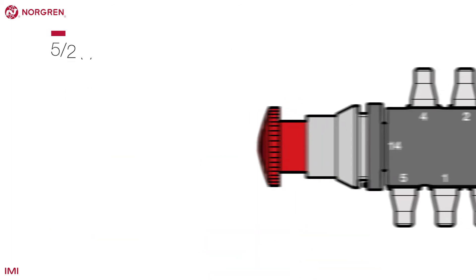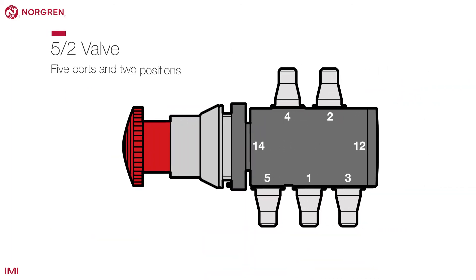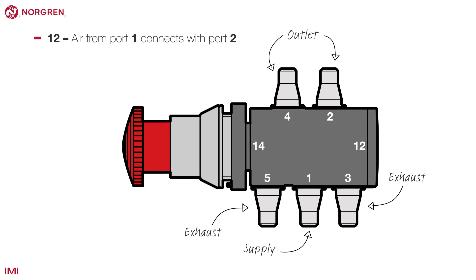A 5-2 valve has 5 ports and 2 positions. As you can see here, there is still 1 inlet, but now there are 2 outlets and 2 exhausts. The 2 positions are air to port 2 outlet or air to port 4 outlet, so the operation for this valve would be 1-2 and 1-4.